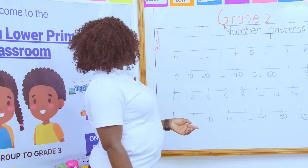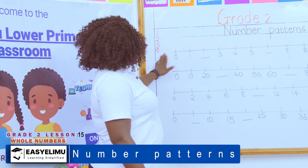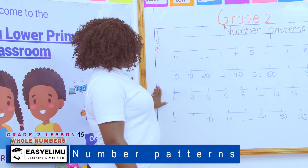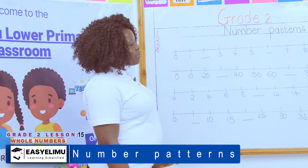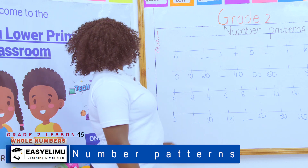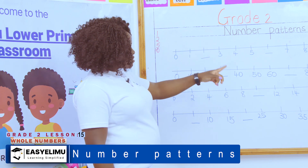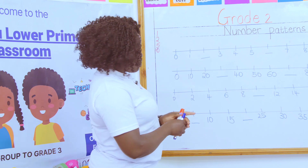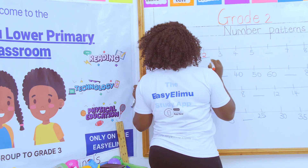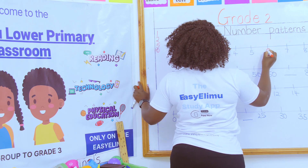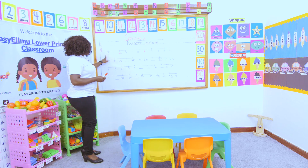Look at our board today. The first question is we want to count in ones, starting from zero. So we sing our song — one, two, three, four, five, six, seven, eight, nine, ten. We are counting numbers. We have already filled in by just singing the numbers.